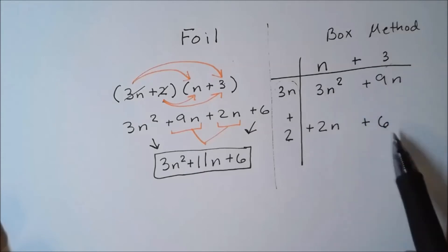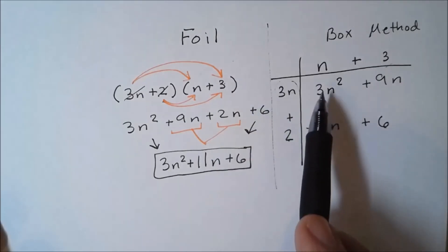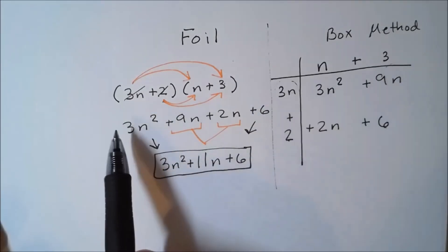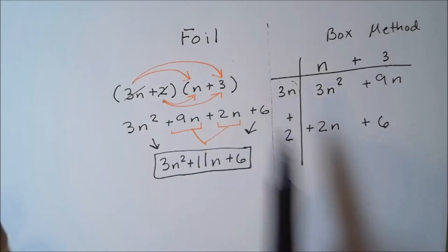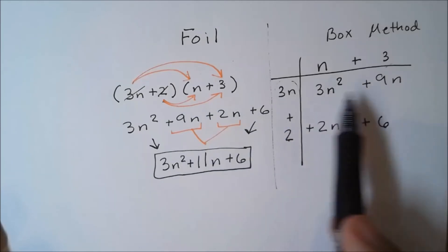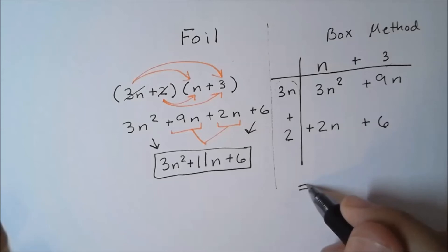Notice I have four terms now. I notice I didn't draw an arrow to it like I did on the foil, but I still have the same terms we ended up with. Here we ended up with 3n squared plus 9n plus 2n plus 6, and here we also end up with 3n squared plus 9n plus 2n plus 6.